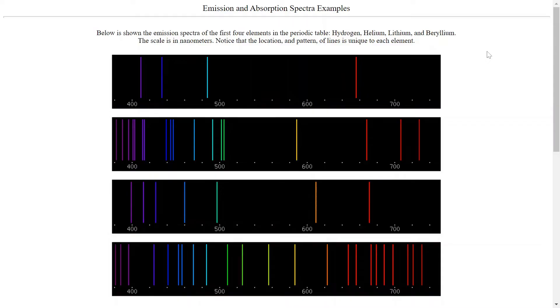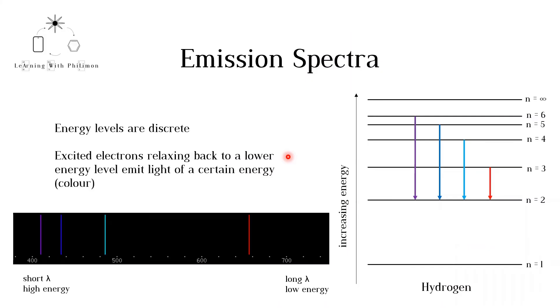On this website, we can see the emission spectra of different elements: Hydrogen, Helium, Lithium, and Beryllium. Note that the colors and the amounts of transitions possible differ between each element. Make sure to check out the links in the description to explore different emission spectra.